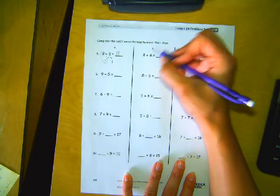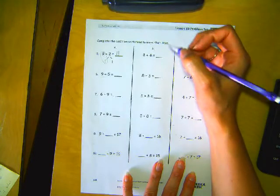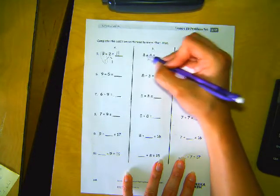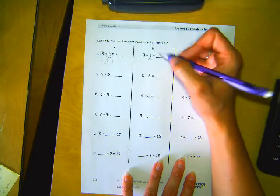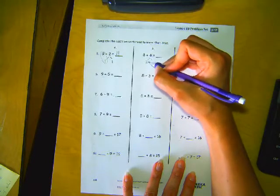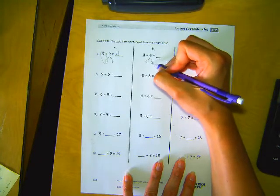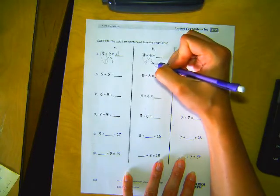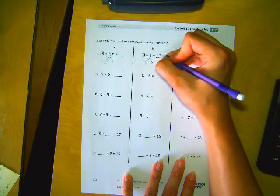That's going to be 8 plus 4 equals blank. We need to break up the 4 into 2 pieces. How many does 8 need to get to 10? We need to break up the 4 into 2. So what other number goes with 2 to get to 4? Another 2. Here's our 10 plus 2. So 8 plus 4 equals 12.